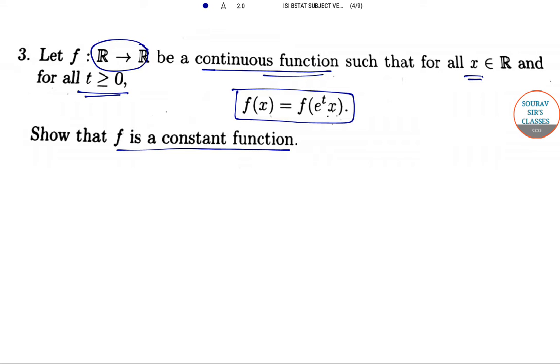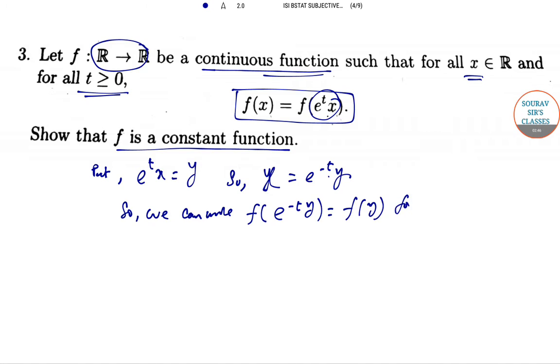So to find this thing, you have to put e^t · x equal to y. So, f(e^t y) = f(y) for all values of t.